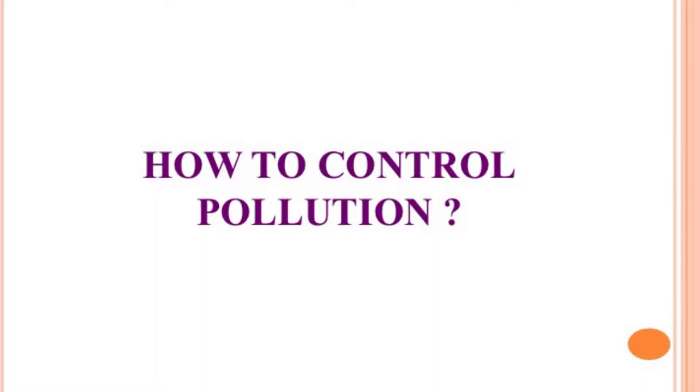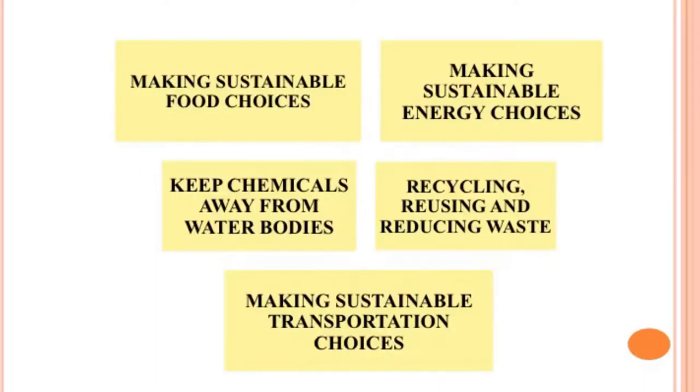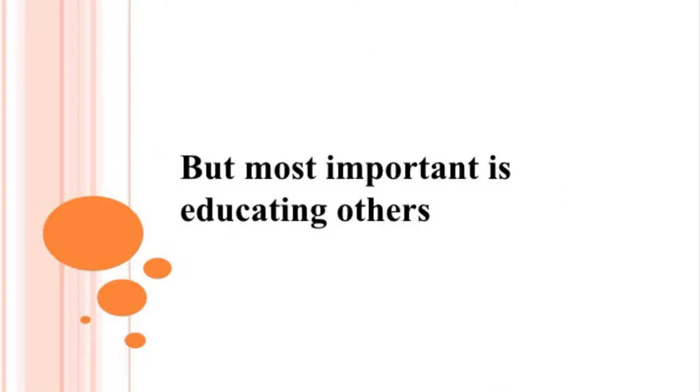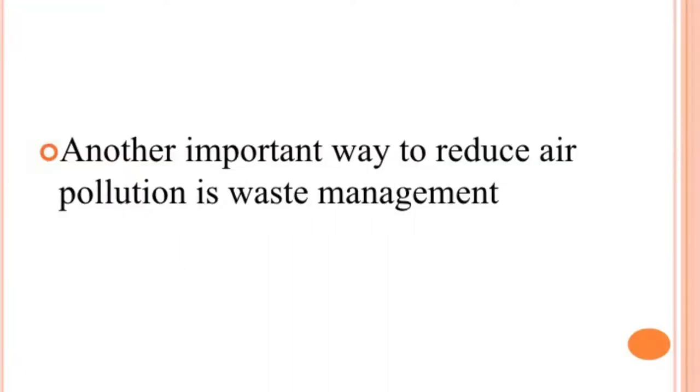We now know the various sources of air pollution and its ill effects, so control and prevention is in our hands. Air pollution cannot be fully prevented, but it can be controlled. Let us see how we can reduce air pollution. We can control it by making sustainable food choices, making sustainable energy choices, making sustainable transportation choices, keeping chemicals away from water bodies, and recycling, reusing and reducing waste. Most important of all is educating others. Another very important way to reduce air pollution is waste management.